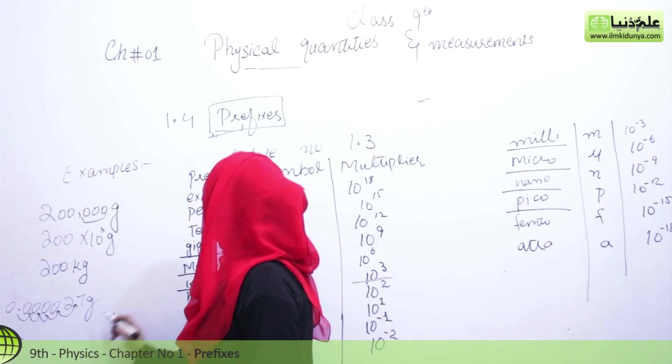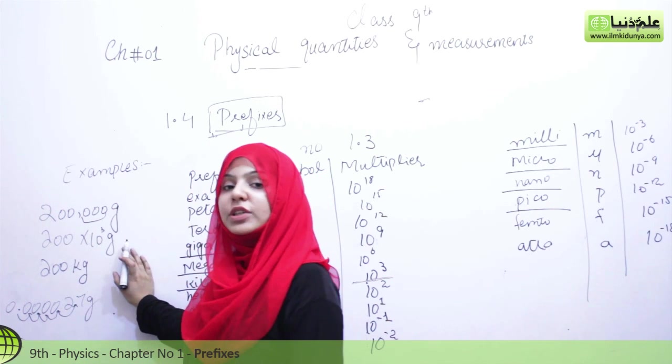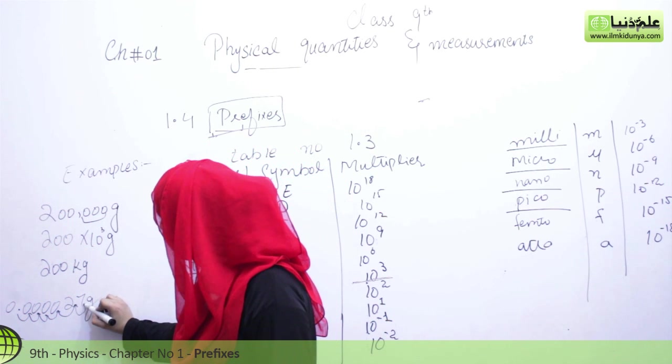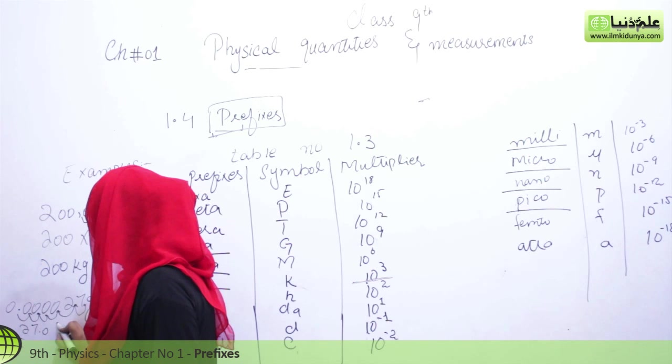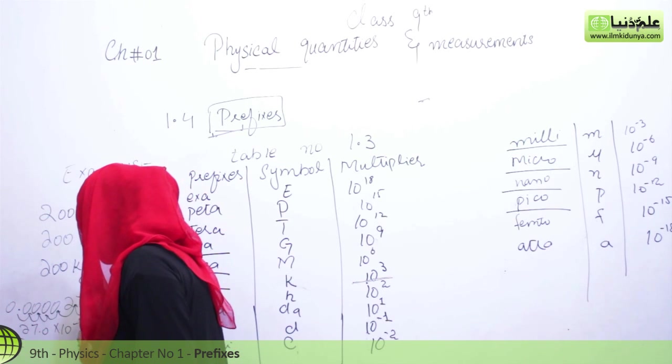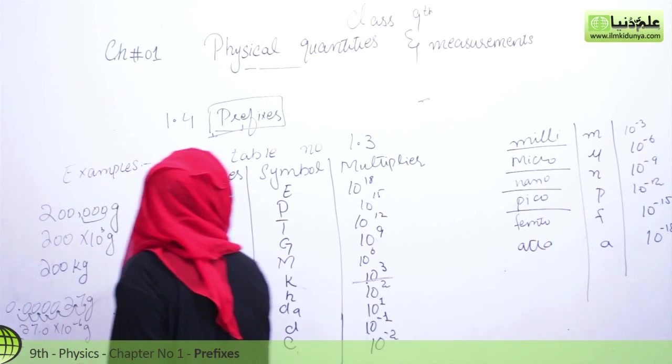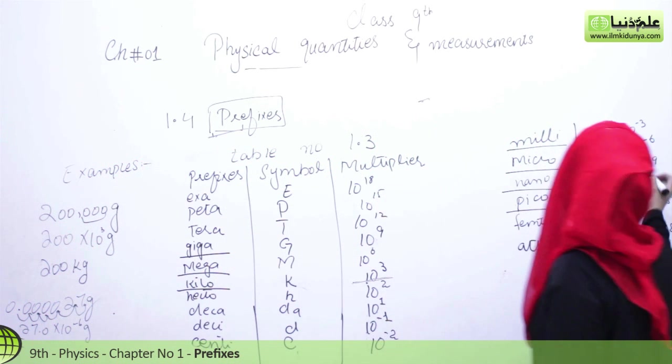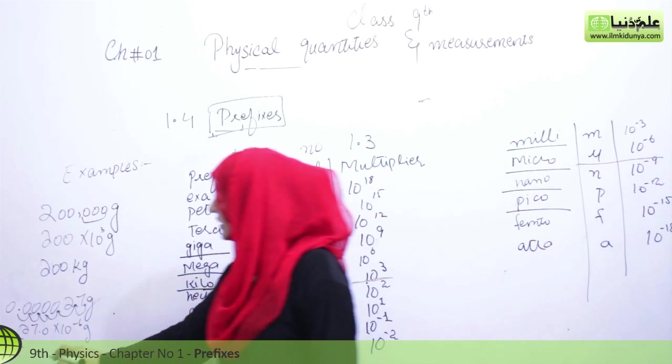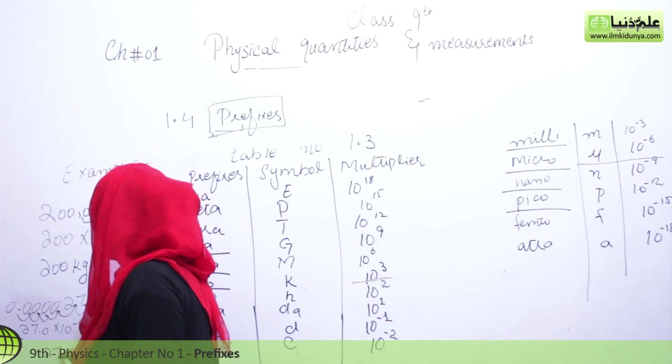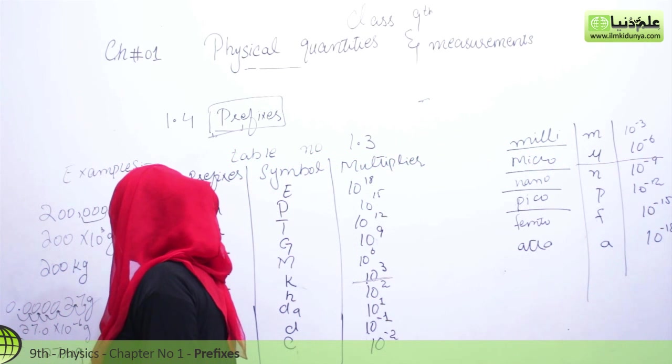Another example: 0.000027 grams. Now here 10 rest to power 5 is not discussed, so I will move it six places: 27.0 into 10 rest to power minus 6 gram. Now 10 rest to power minus 6, we have defined here as equal to micro. So here it will simply be written as 27 microgram.